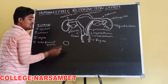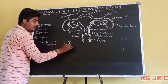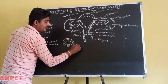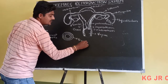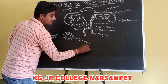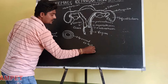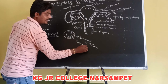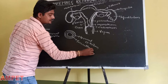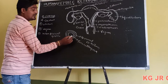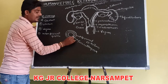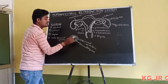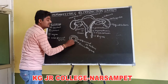The ovaries are externally enveloped by two layers. The outer layer is called the germinal epithelium, and the inner layer is called the tunica albuginea. These two layers envelope the ovary.